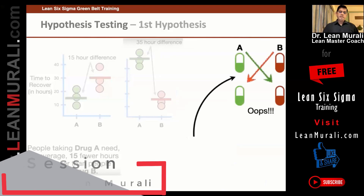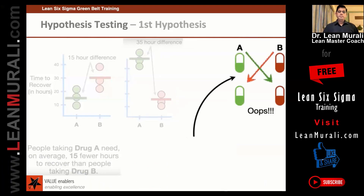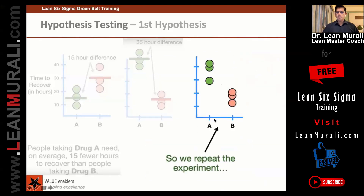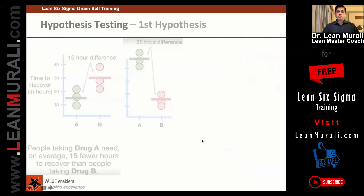There is one more possibility. It is possible that we mislabeled drug A as B and B as A. So what we have to do to validate this is to repeat the experiment.